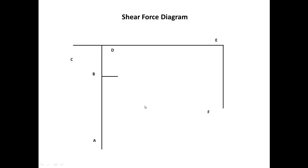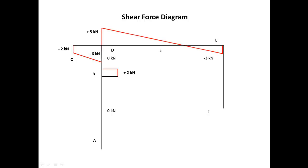For the shear force diagram: no shear in AB, a shear of plus 2 kNm in BB prime, no shear in BD, negative 2 kNm and negative 6 kNm in the cantilever segment. For member DE, we had 5 going up, decreasing linearly, and ending at negative 3. For EF, it's 2 positive at the bottom and 0 at point E.